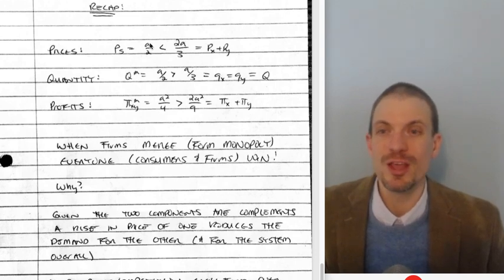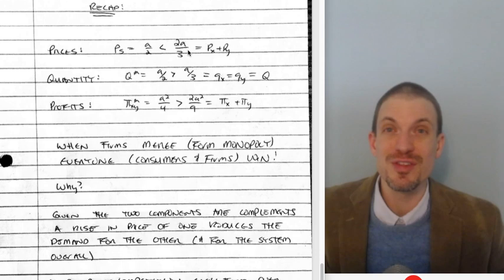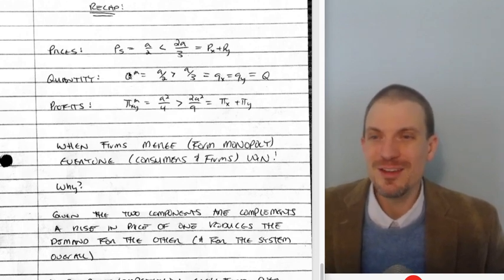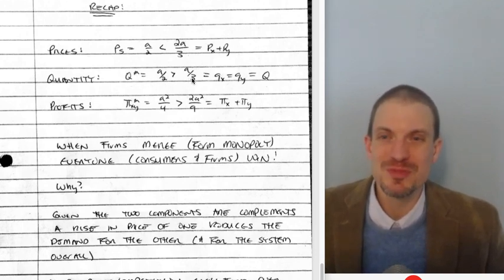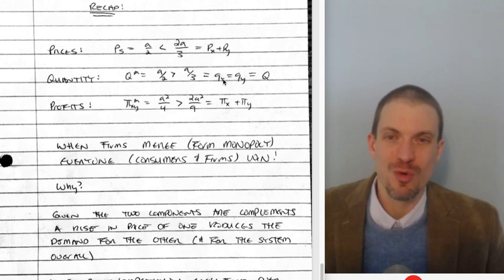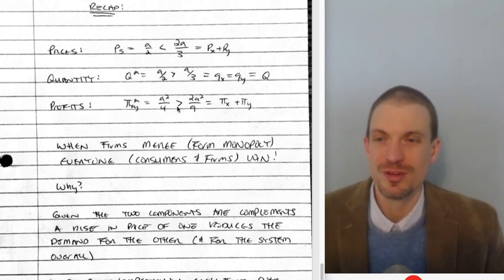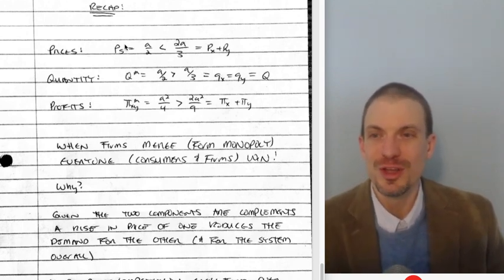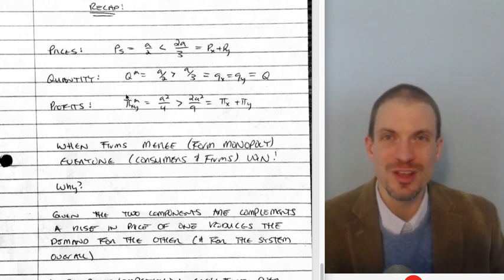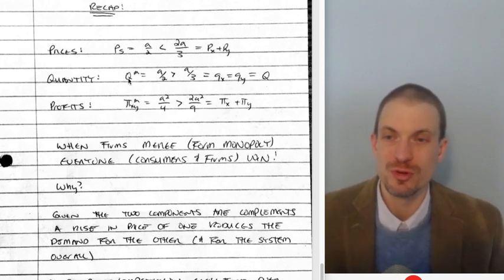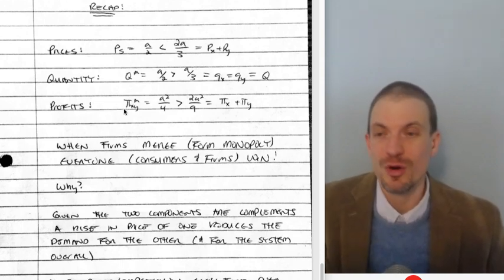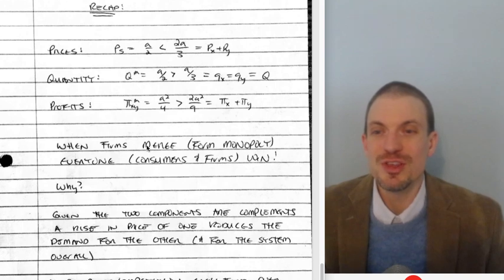and we can get our comparison. Turns out profits are actually higher for the firm operating as a monopoly, for the merger, than it was jointly, or summing up the profits for the two firms producing good X and good Y separately. What about the price? A over 2 is smaller than two-thirds A over 3. And what about the quantity? A over 2 is bigger than A over 3, which is the quantity of the system sold. So as a whole, prices have fallen. The quantity risen, so consumer surplus has risen. If prices fall and quantity rises, there's more consumption. Consumer surplus rises. Profits rose.